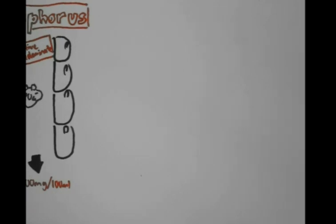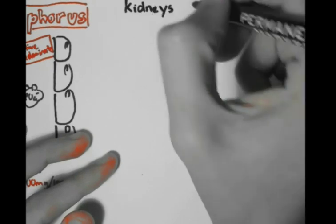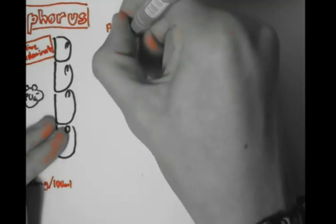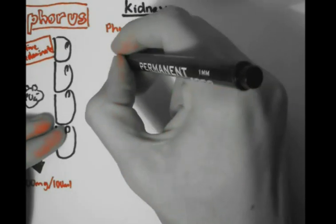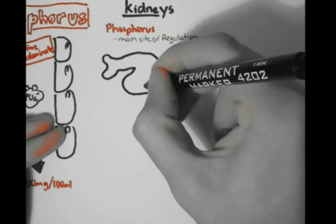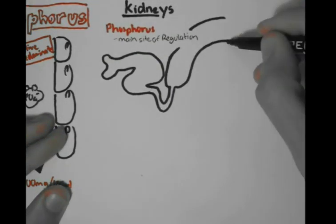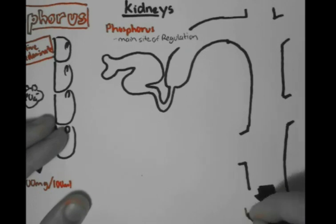Another regulation site, besides the intestines, are the kidneys, where calcium and phosphorus are absorbed or secreted as urine. The kidneys are the main regulation site for phosphorus and mainly work by active transport. The functional unit of the kidney, where calcium and phosphorus are absorbed, is the nephron — which includes the proximal convoluted tubules, the loop of Henle, the distal convoluted tubules, and the collecting ducts. The final product is total urine.